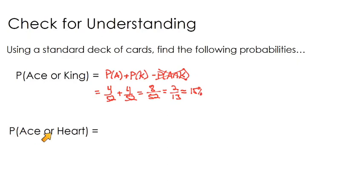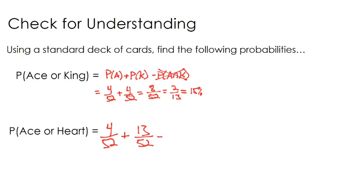Now drawing an ace or a heart: the probability of an ace is 4 out of 52. Add the probability of a heart — there are 13 hearts out of 52 total. But there's one card that is both an ace and a heart: the ace of hearts. That ace of hearts got counted in both categories, so we subtract it out: 1 out of 52. That gives us 16 over 52, which is roughly 31%.